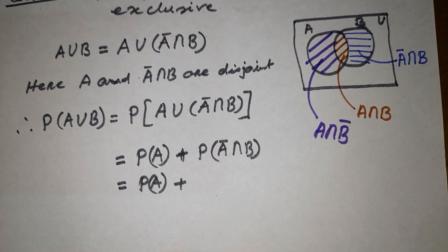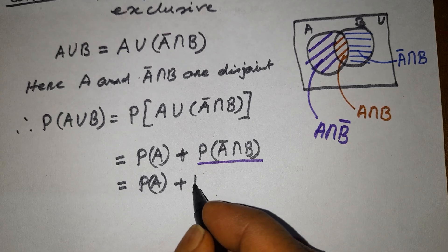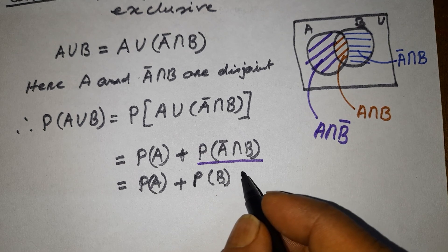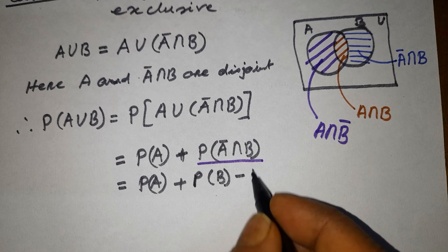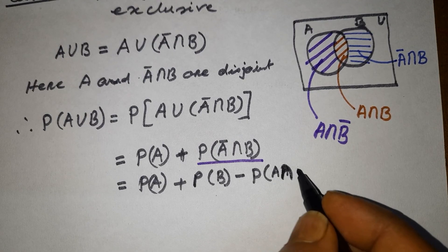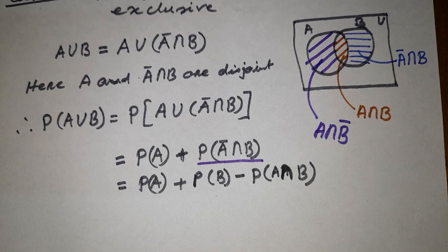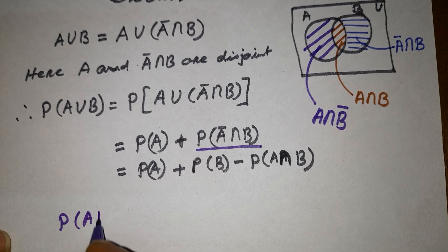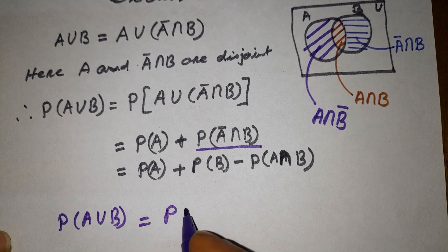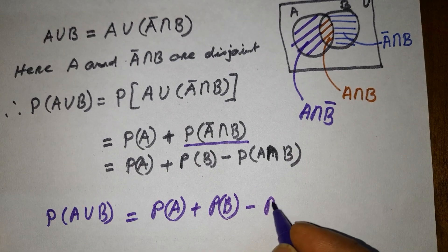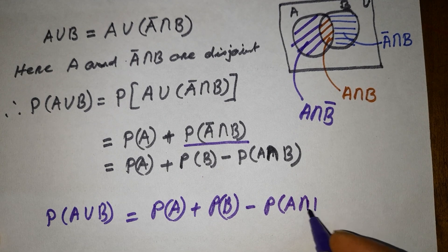The probability of A complement intersection B can be written as probability of B minus probability of A intersection B. Hence, we have got that probability of A union B is equal to P of A plus P of B minus P of A intersection B.